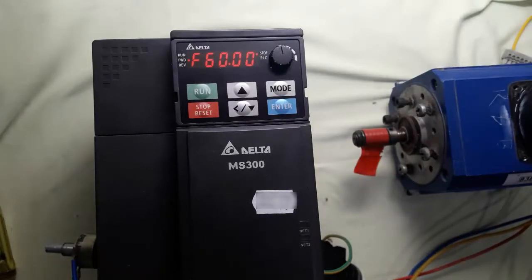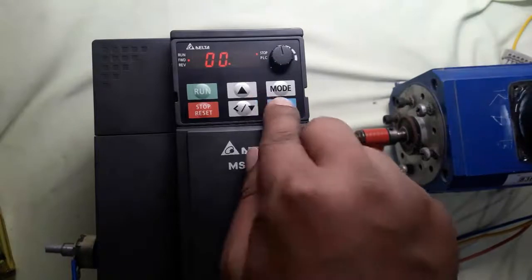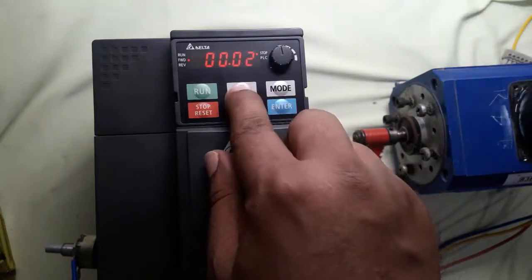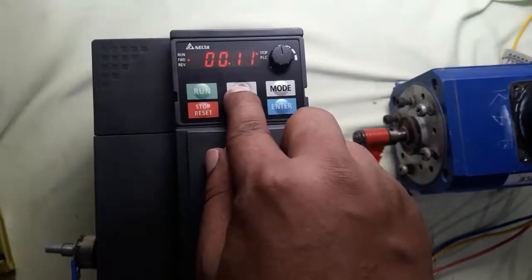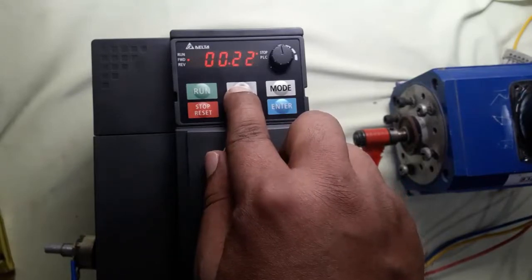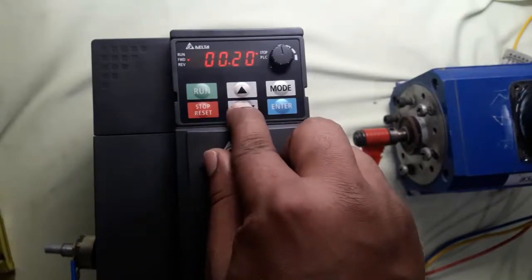For any machine, we need to set parameters in terminal operation. First need to set frequency command in parameter 00-00-020.